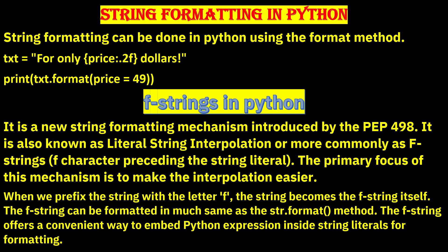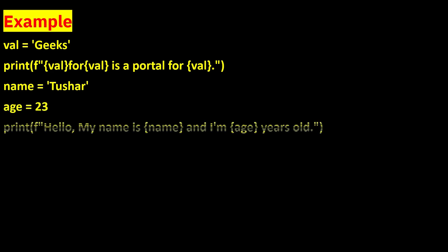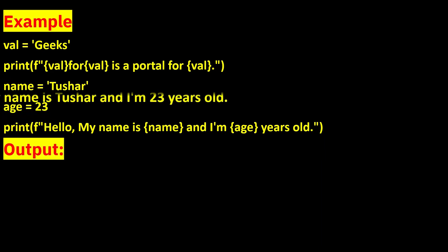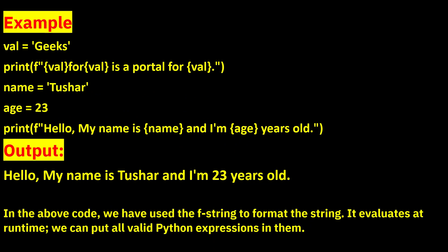Example: wall is equal to 'geeks', print f'{wall}'. For a more complex example: wall dot name is equal to 'Tushar', age is equal to 23, then print f'Hello, my name is {name} and I'm {age} years old.' Output: 'Hello my name is Tushar and I'm 23 years old.' In the above code, the f-string evaluates at runtime and can contain any valid Python expression.